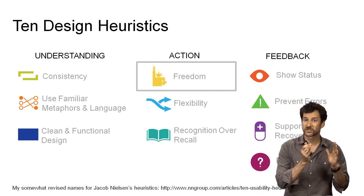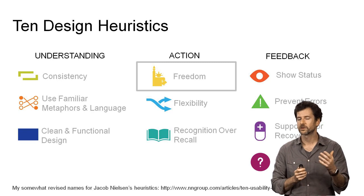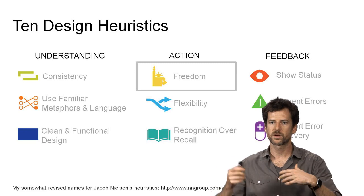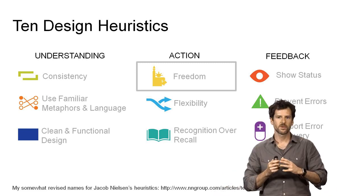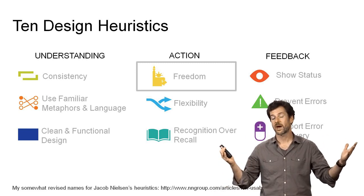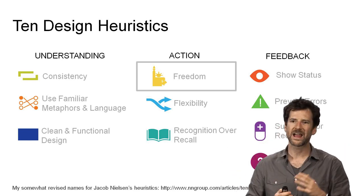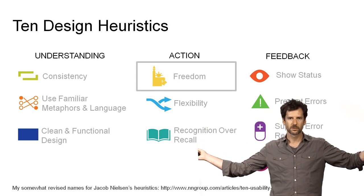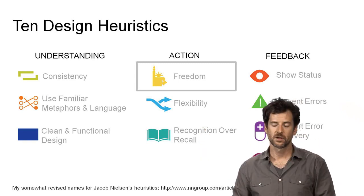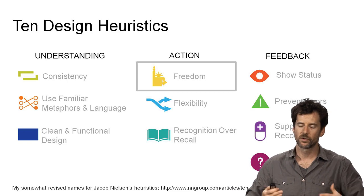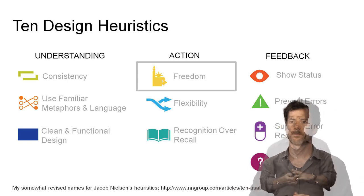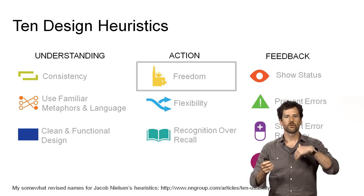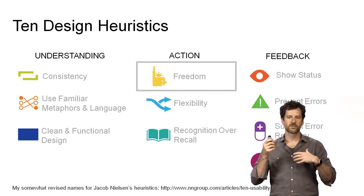It can be a strong impulse in organizations to add value to whatever you're doing, but sometimes that takes away from core user needs. For example, on this student loan website, what you want is to find your loan balance, pay your loan, and keep your address up to date. Somebody thought it'd be a good idea to add widgets, but nobody spends that much time on their student loan website. This wraps up our heuristics on helping users understand your interface.